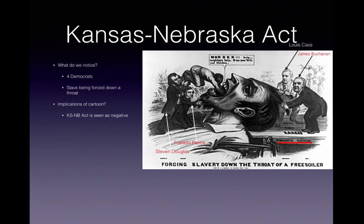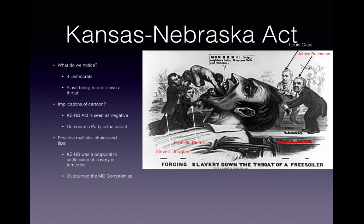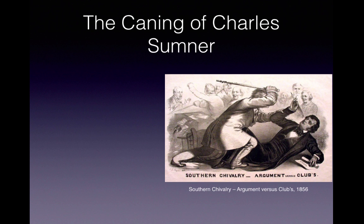The Kansas-Nebraska Act is seen as negative in this cartoon, with the Democratic Party as the culprit. The act was proposed to settle the issue of slavery in the territories, but instead it overturned the Missouri Compromise and introduced popular sovereignty in Kansas and Nebraska — the idea that residents of a territory vote on whether to be free or slave. Violence soon emerged in 'Bleeding Kansas,' a mini civil war in the 1850s.